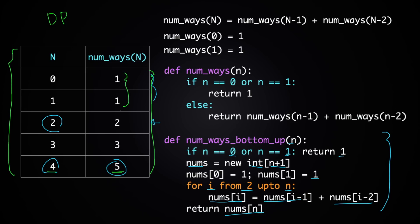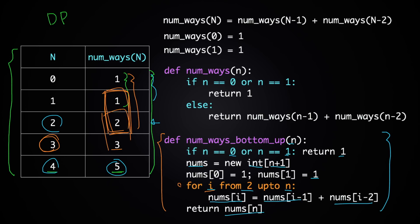This function works fine, but if you want to save more space, you can optimize further. When computing nums[i], you only need the two previous elements — so instead of storing the whole array, you only need to store two values at a time as you iterate. That's my solution to the first problem. Now let's look at the variation with a set x.